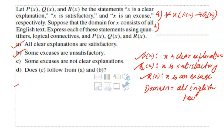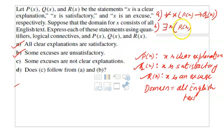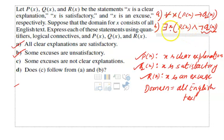Some excuses are unsatisfactory — here we use the existential quantifier. There exists x, R(x) and negation of Q(x). We should not write R(x) implies negation of Q(x); rather we write R(x) and negation of Q(x). When using the existential quantifier we use conjunction, not implication. Please watch the previous videos for a better explanation of this.